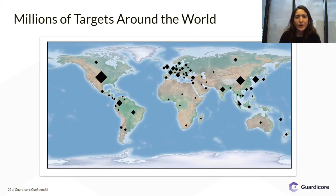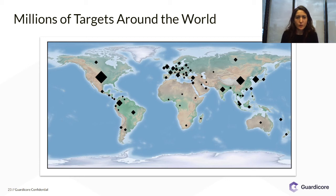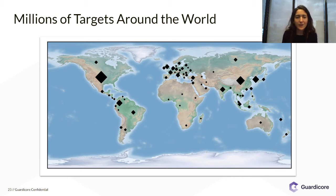Now regarding targets. Being able to talk to other nodes allowed us to understand the scope of the campaign. We took all the nodes we knew of and asked each of them for their target list, and we constructed this enormous target list with millions of targets around the world and put it on a map. As you can see here, the targets are mostly in the US, Europe, India, and South Korea.